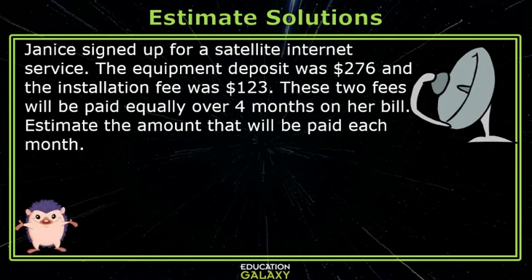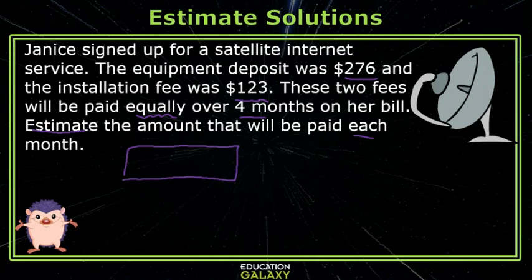Janice signed up for a satellite internet service. The equipment deposit was $276 and the installation fee was $123. These two fees will be paid equally over four months on her bill. Estimate the amount that will be paid each month. If something is going to be paid over four months, that's a division action.